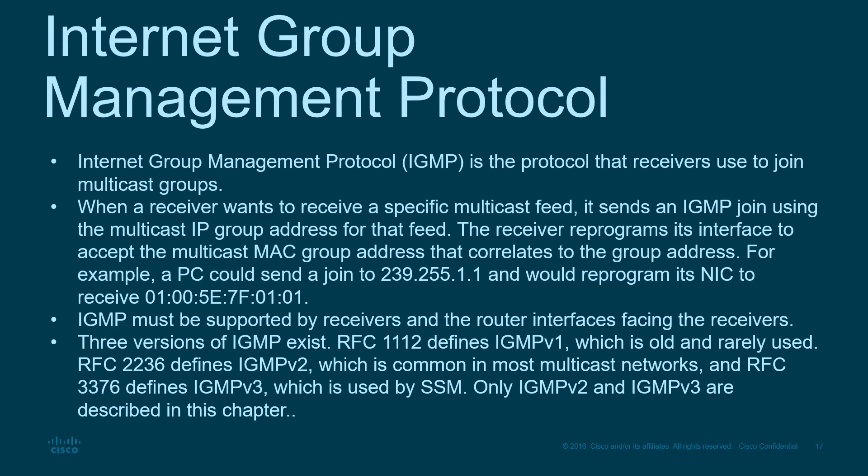The NIC responds to its primary IP address and now also listens for an additional MAC and IP address — responding to both the primary NIC address and its multicast address. IGMP must be supported by the receiver and the router interfaces facing the receivers. There are a few versions: RFC 1112 defines IGMPv1 (older, rarely used); RFC 2236 defines IGMPv2 (more common but dated); RFC 3376 defines IGMPv3 (the current recommended version). Only IGMPv2 and v3 should be used.